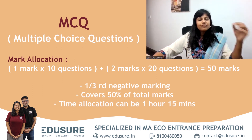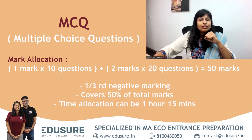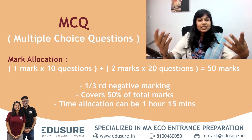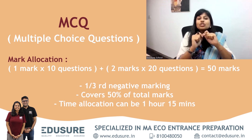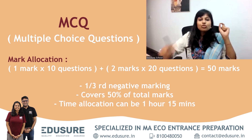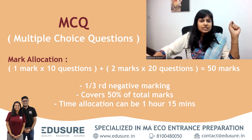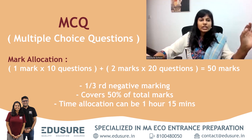Since this MCQ section gives 50% of the marks, an average allocation should be 50% of the time. It's a three-hour paper, but you should set aside about half an hour for paper analysis and revision — to make sure you haven't marked any wrong answer, like accidentally marking B instead of A. So actual solving time is only two and a half hours, and out of that, about one hour and 15 minutes should be allocated to the MCQ section.